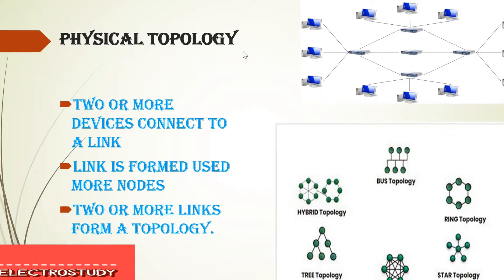Topology is nothing but the geometrical representation of the network — how the links and nodes are formed. We have different types of topologies which I have already mentioned. In the last video we saw about what is mesh topology in detail. In this video we will be seeing what is star topology in detail.